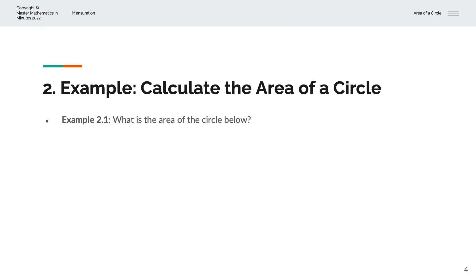In the first example, we're asked to calculate the area of the circle below. So this circle has a radius of 3 centimeters. And so the area is equal to A, this equals πr squared.